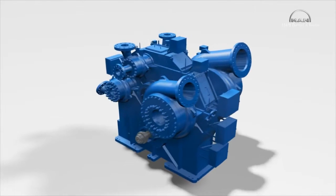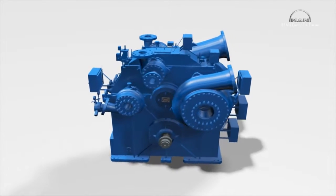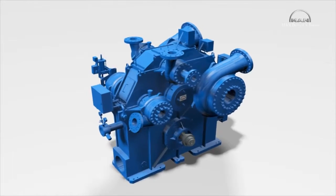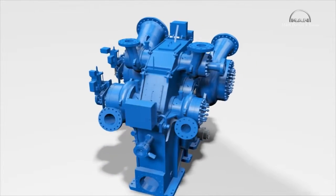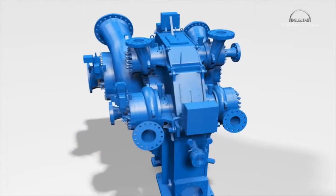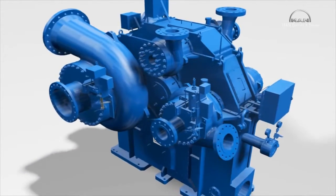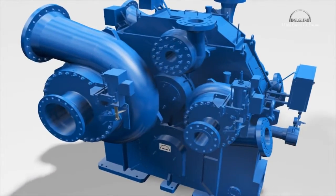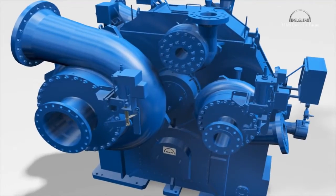This compressor has six stages, arranged in two sections. Downstream of the second stage, the customer can draw off a specific volume at medium pressure. The remainder is further compressed to the desired discharge pressure by the second section consisting of stages three to six.